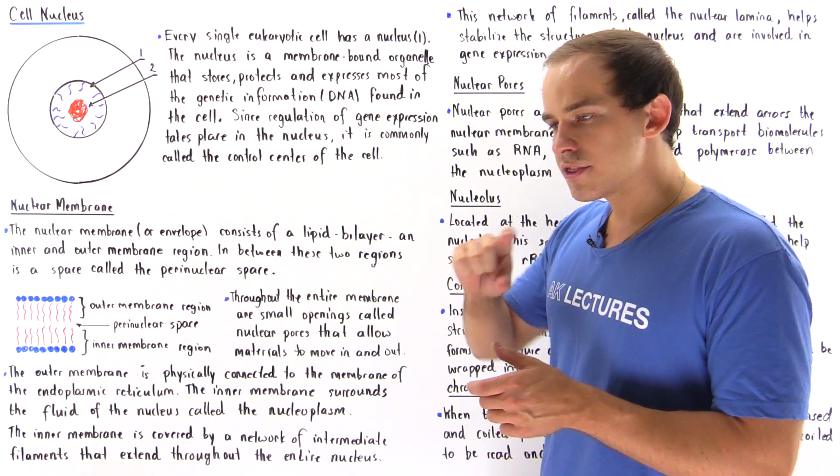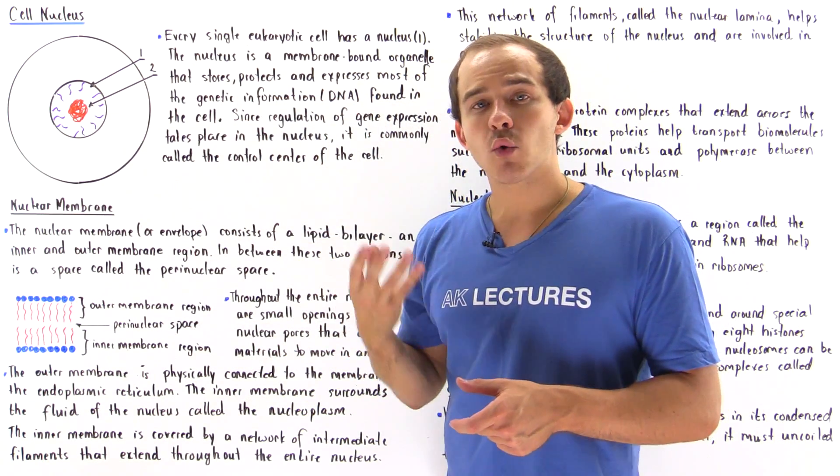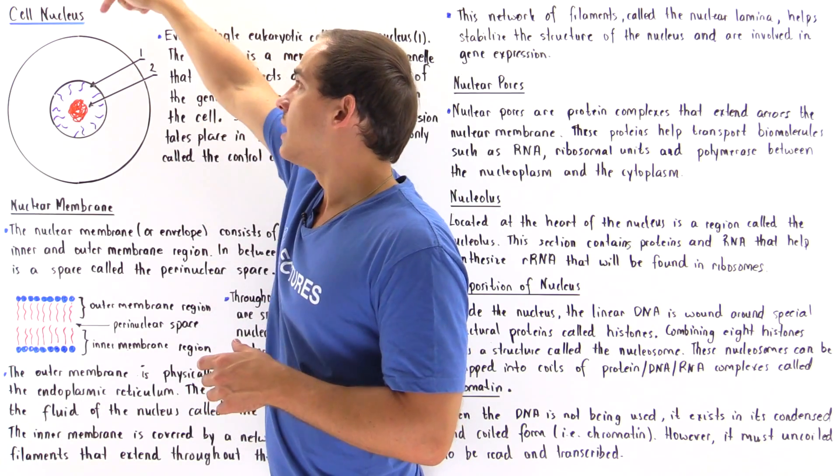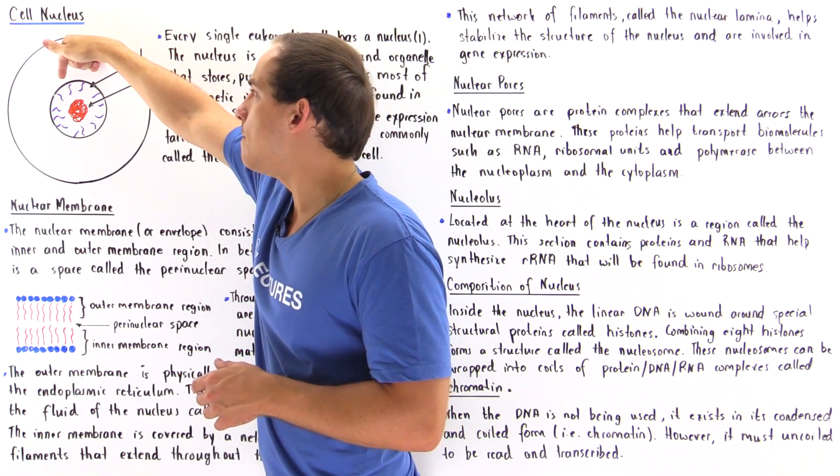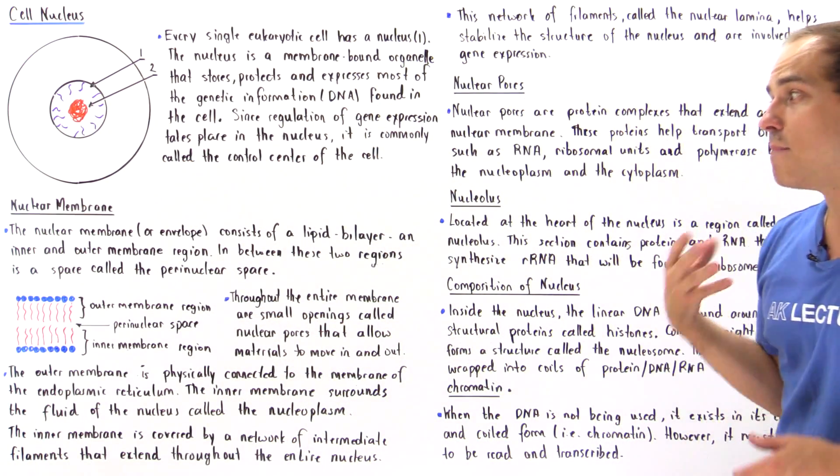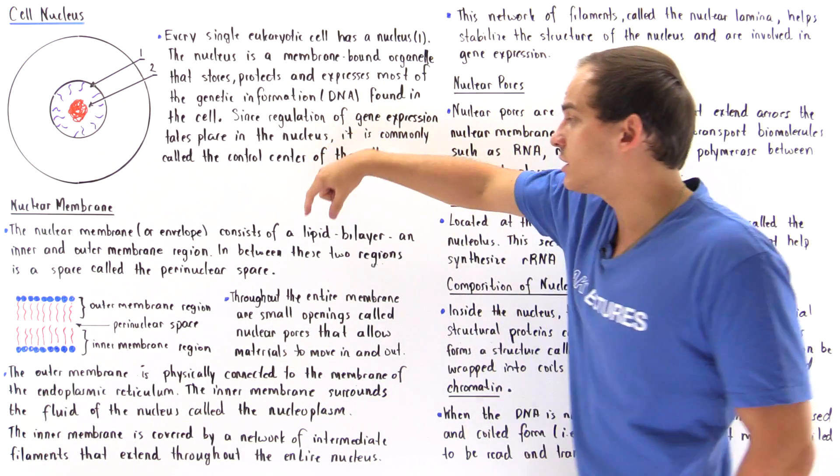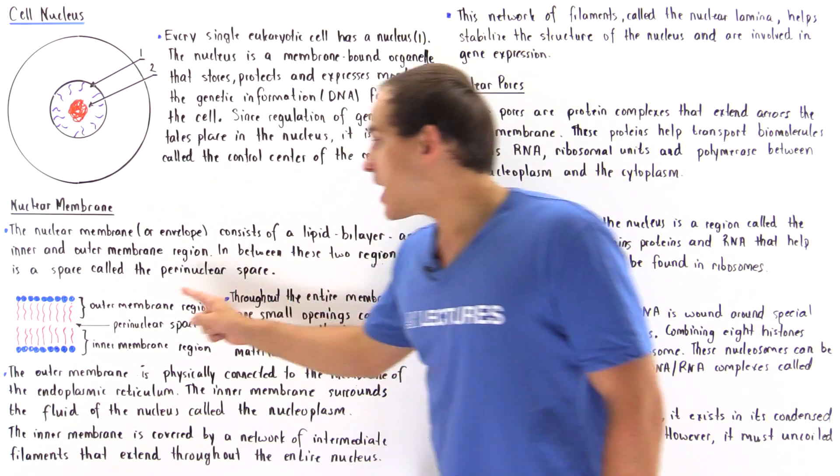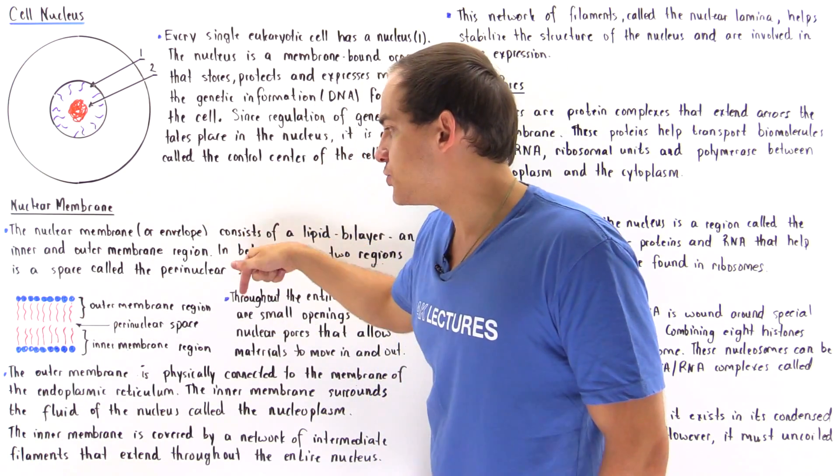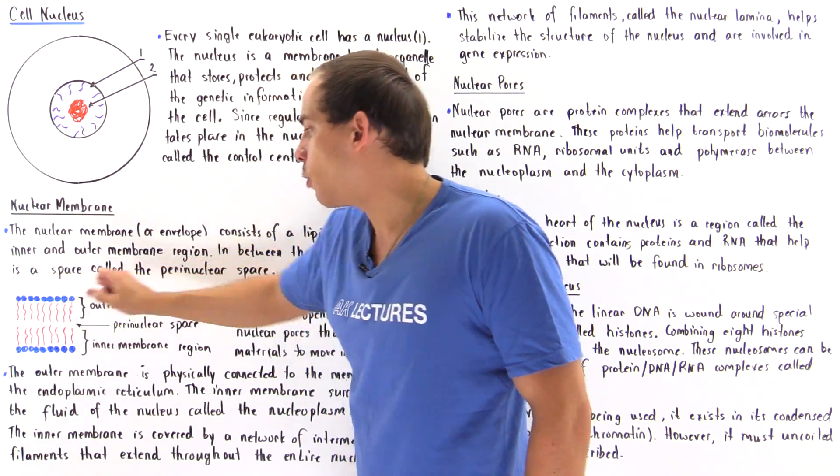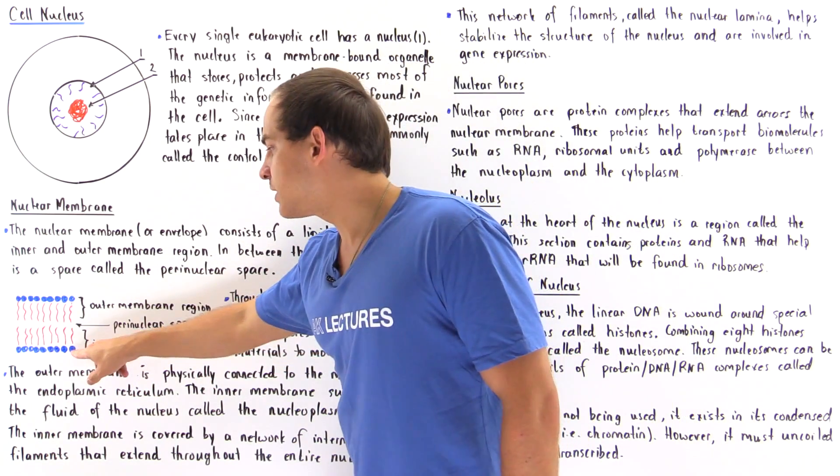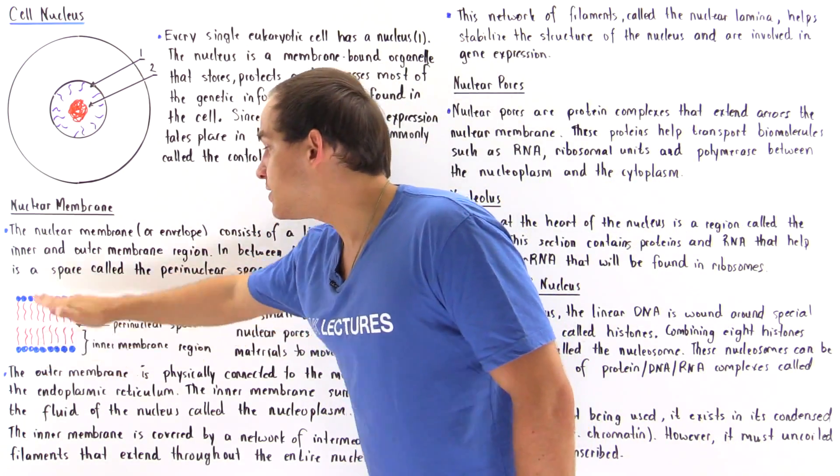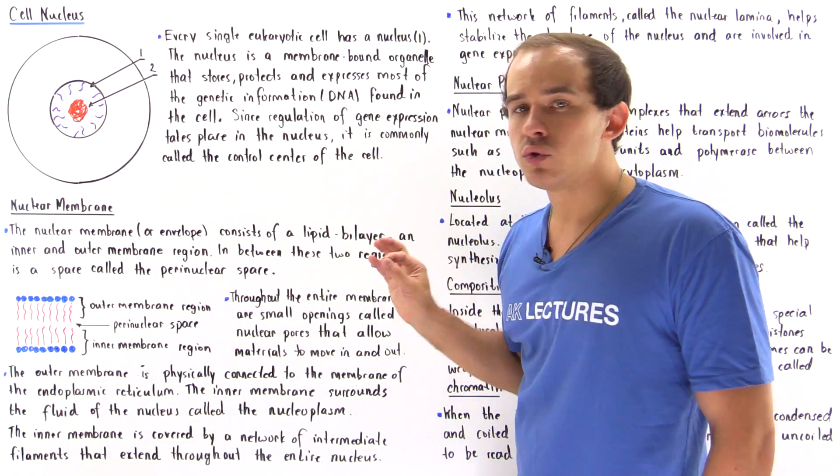Let's begin by discussing the envelope, the region that encloses our nucleus. This is known as the nuclear membrane or nuclear envelope. Just like the entire eukaryotic cell contains a cell membrane, the nucleus contains the nuclear membrane. The nuclear membrane, just like the actual cell membrane, consists of a lipid bilayer with an inner and outer membrane region. We have the outer membrane with hydrophilic heads and hydrophobic tails, and the inner membrane with hydrophilic heads and hydrophobic tails. The space between these two regions is known as the perinuclear space.